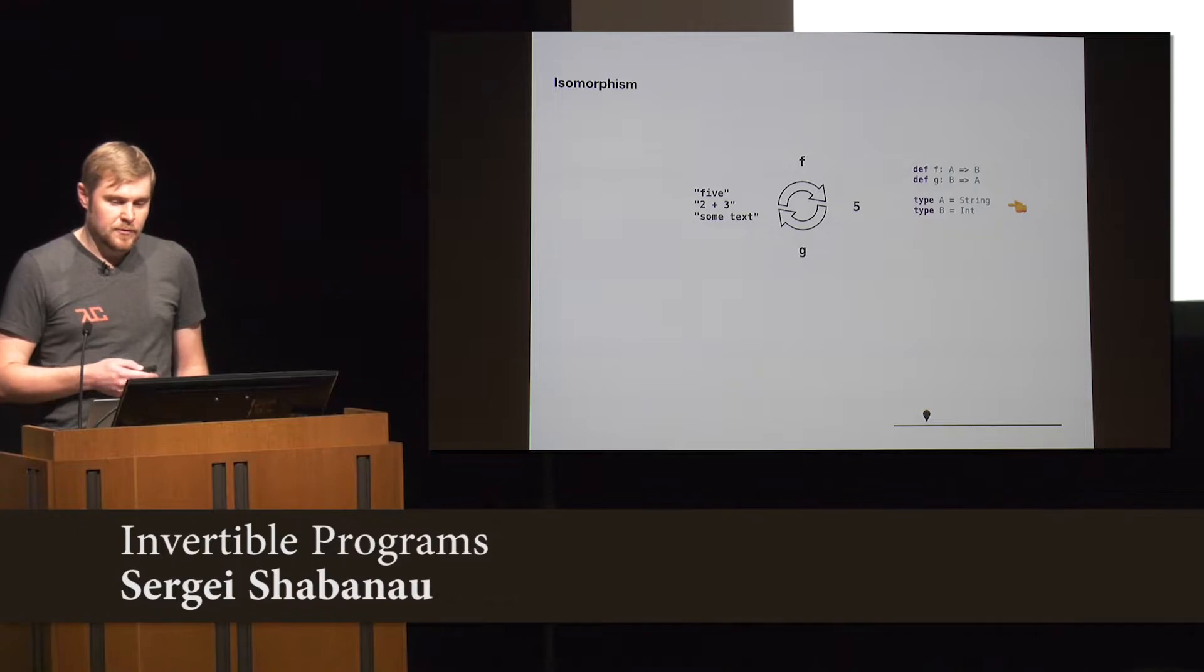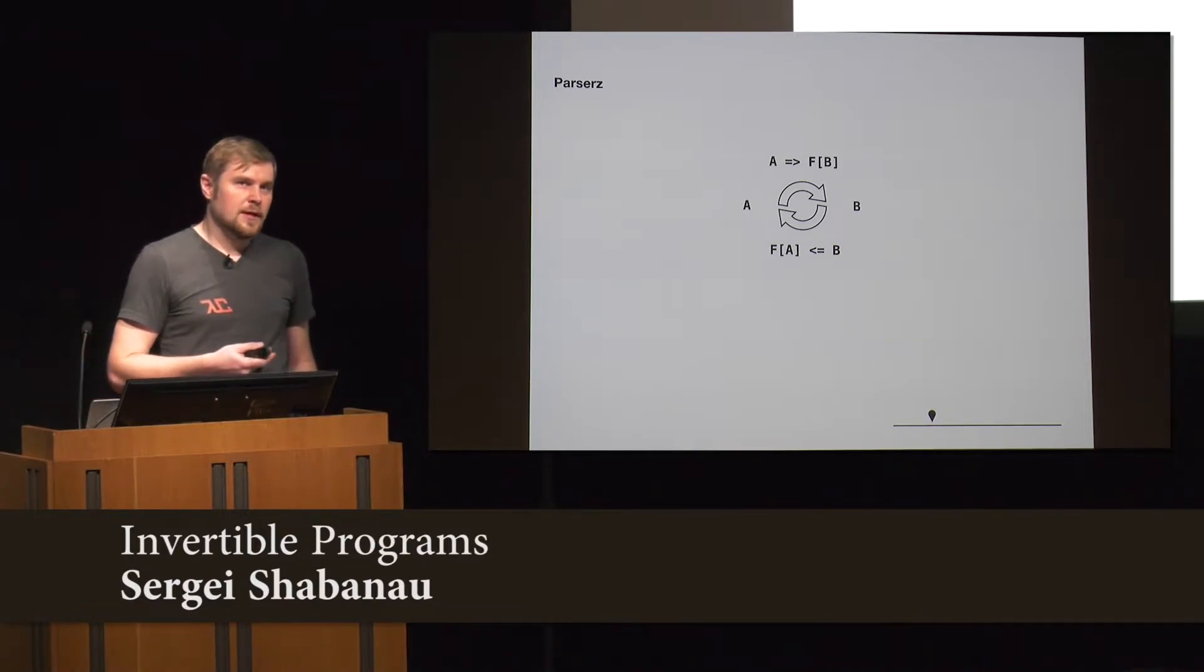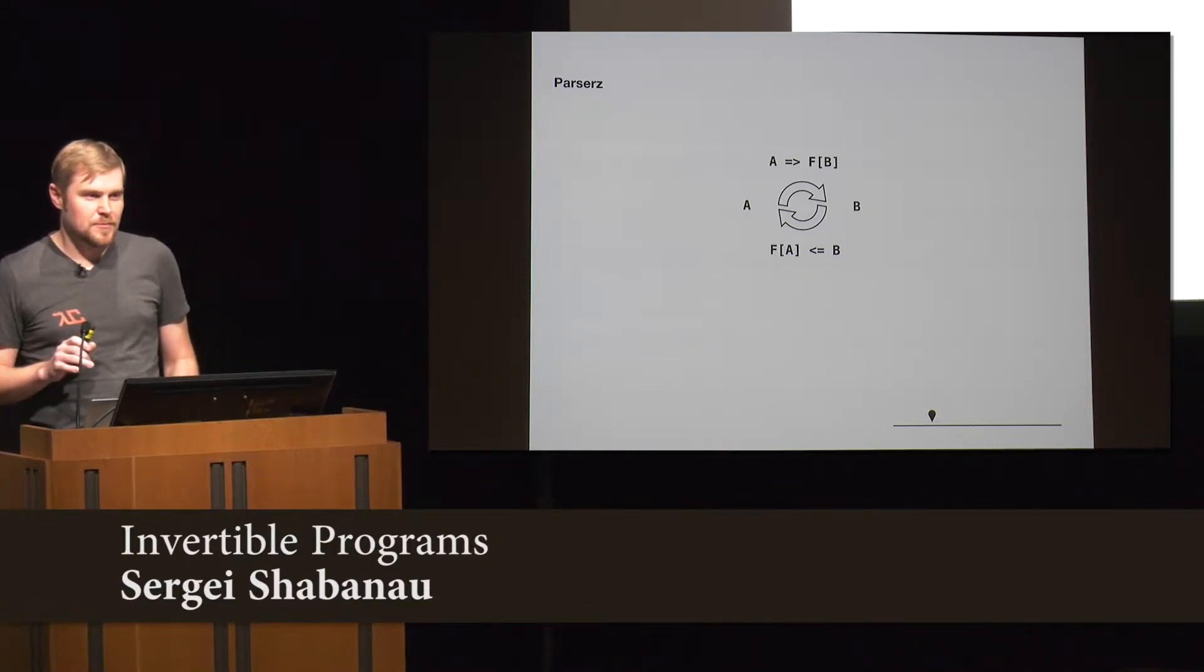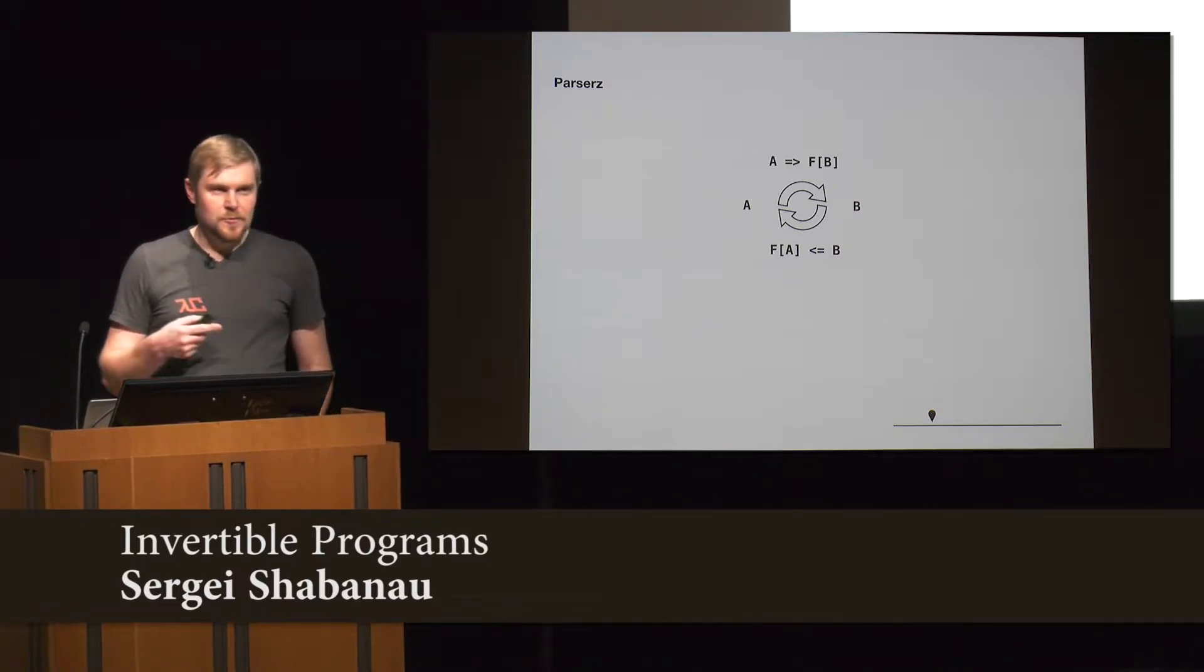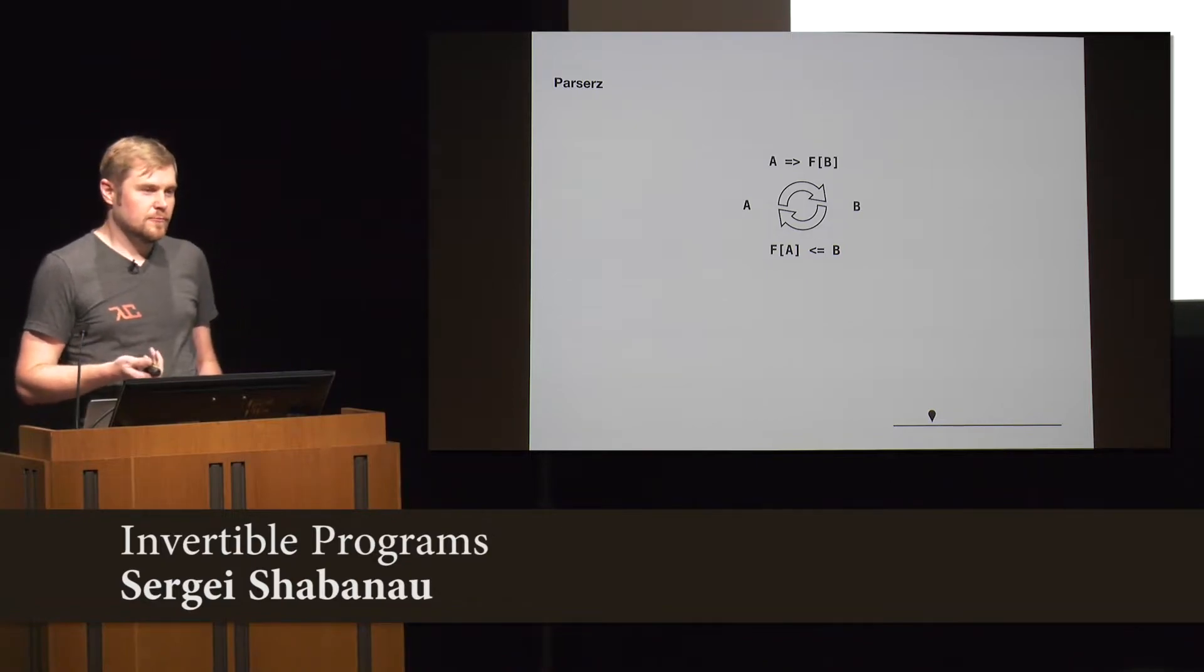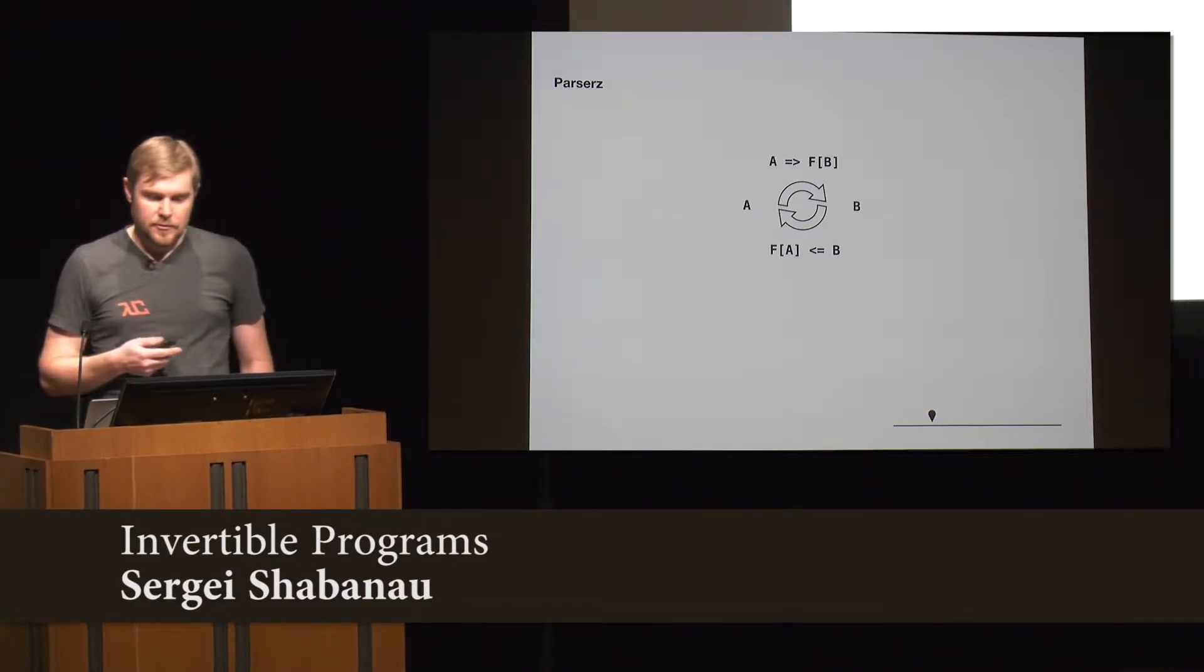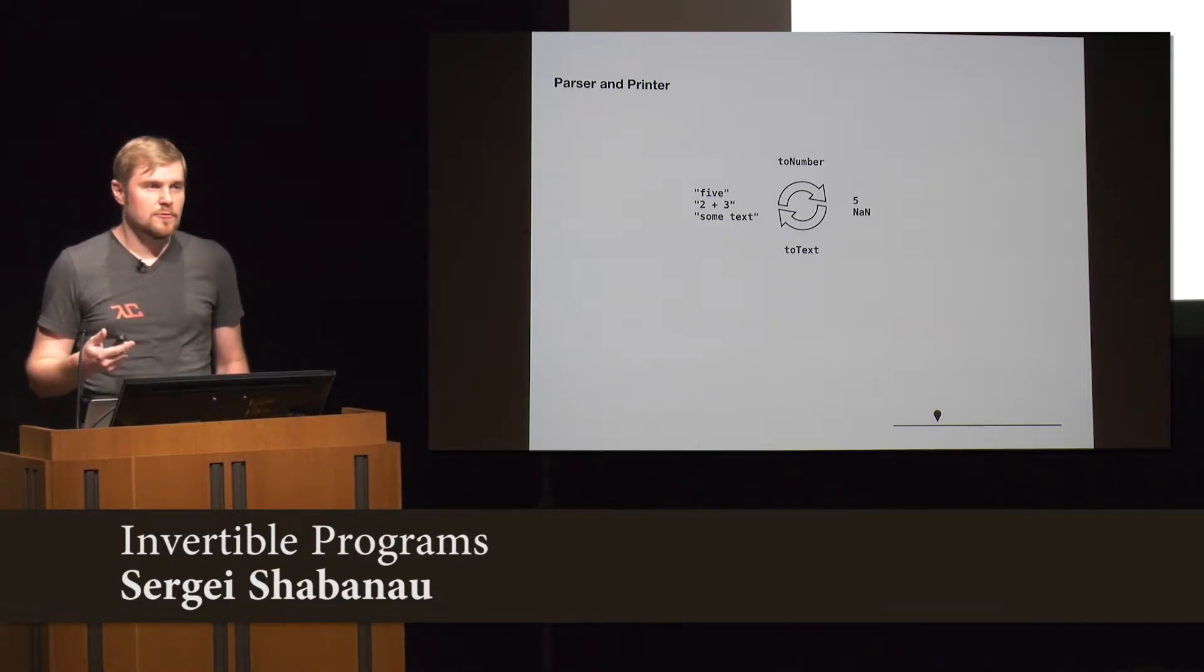So, there is a research behind this problem, and that research is done for Haskell. It introduces a concept called partialization. The word partialization is not a joke. What they do in the research, they make the type, the output type optional. So, essentially, you're going from A to an optional B. It's very important for us functional programmers, because here we regain totality of all our functions. And now you can see that I can go between some text to a number. I'm just going to get none.